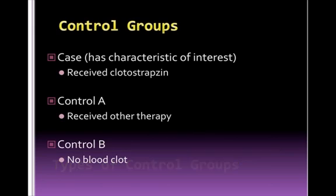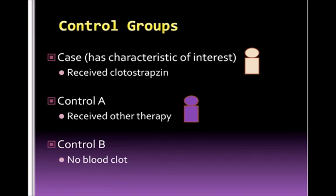Now let's discuss the types of control groups that may be selected for case control studies. In a case control study, the case always has the characteristic of interest. In this example, all of the cases have received clodostrapsin. There are two different types of control groups that may be selected: subjects who received other therapy for a blood clot, and subjects who have not had a blood clot. The interpretation of the findings will vary based on the type of control group selected because risk factors differ between the control groups.